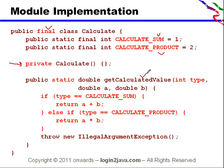Then this is your method, get calculated value, where you pass first the type of the calculation that you need to perform and then the two values, A and B, these two values.